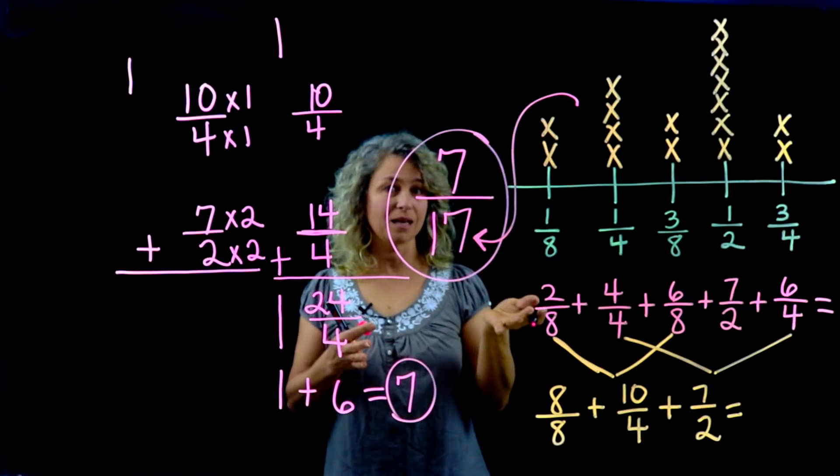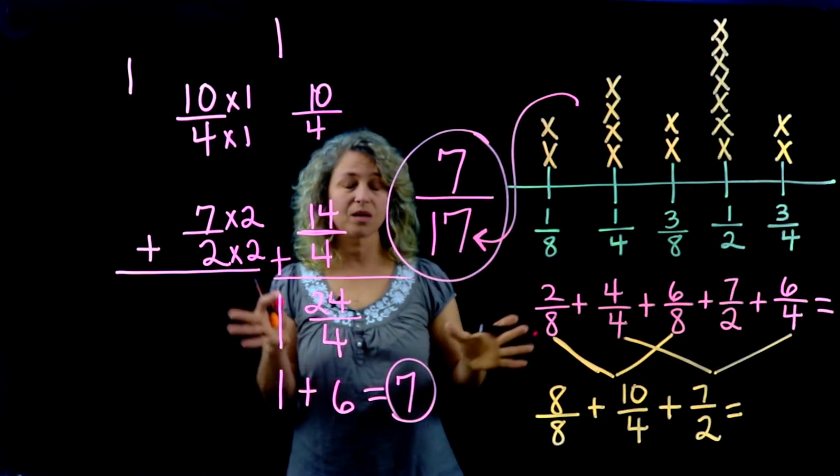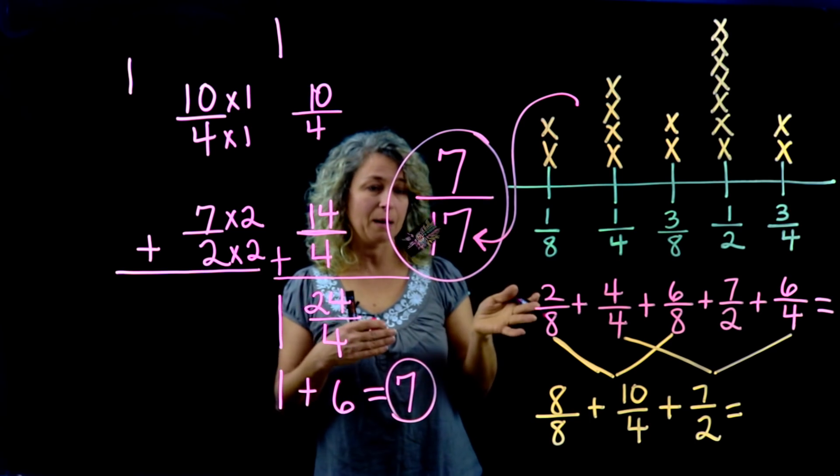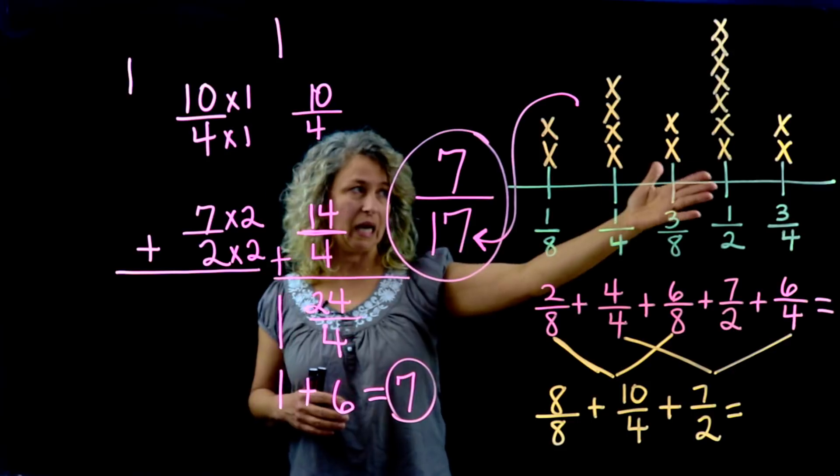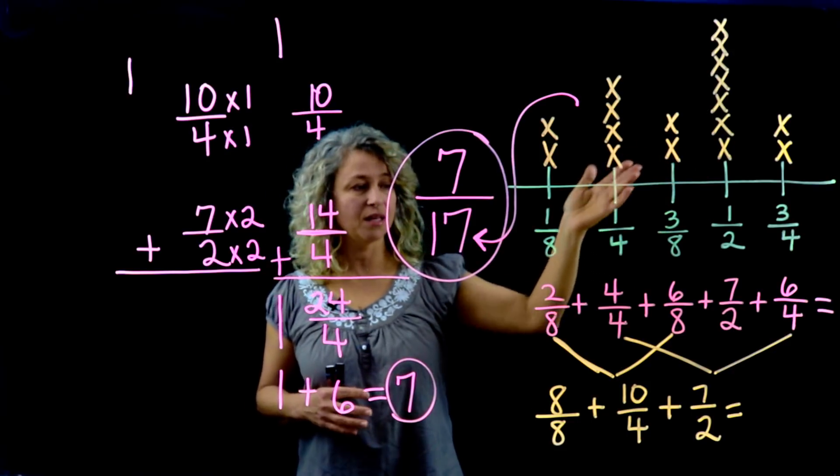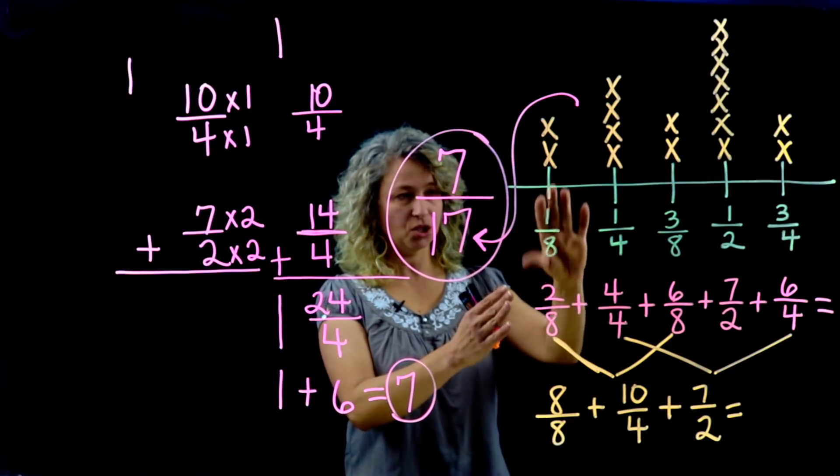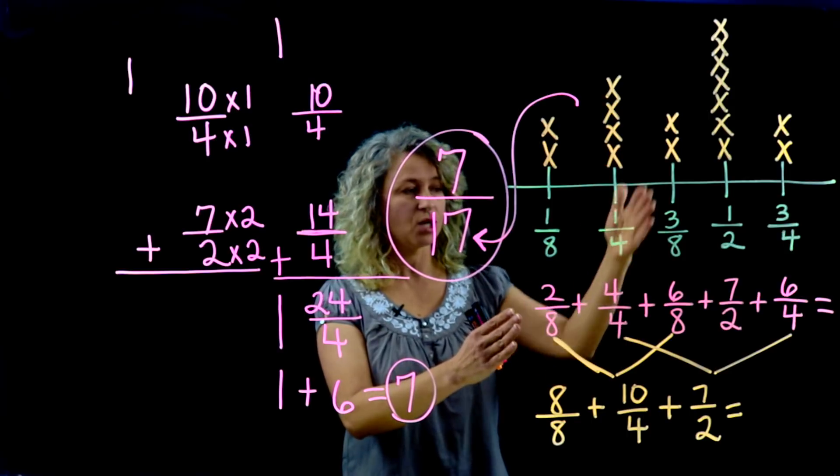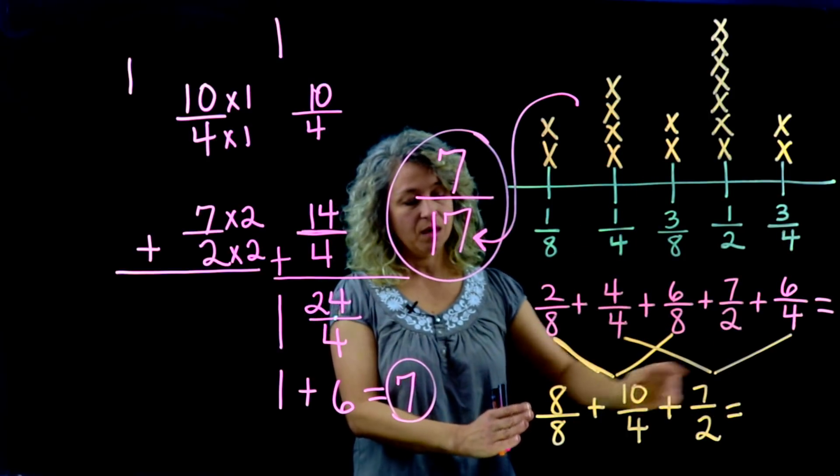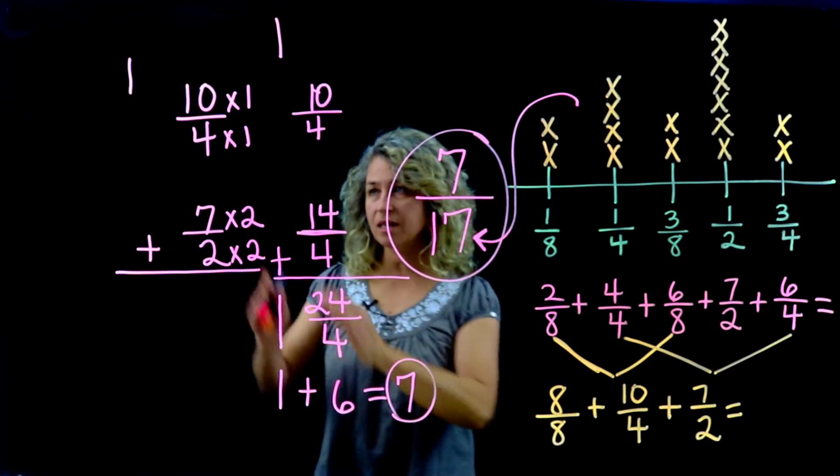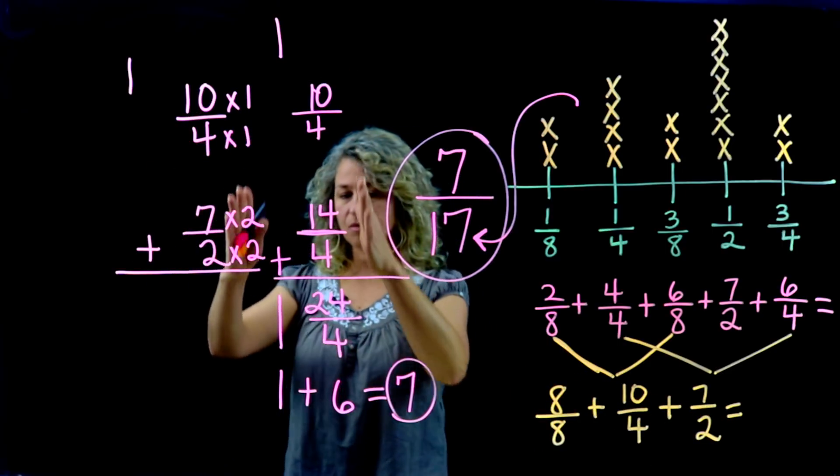Seven-seventeenths of an inch daily is what we get if we redistributed all the rain equally per day. So for a line plot, we took the data, we put it on the line plot, then we added each of the totals, and then we added all those together.